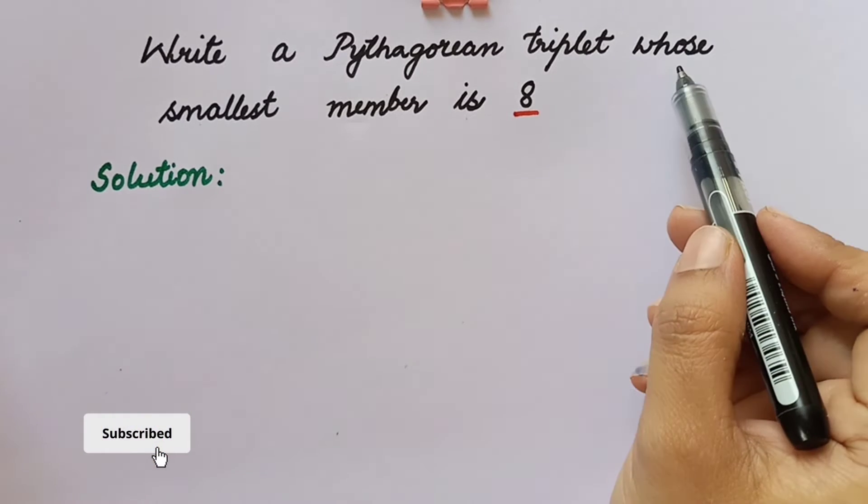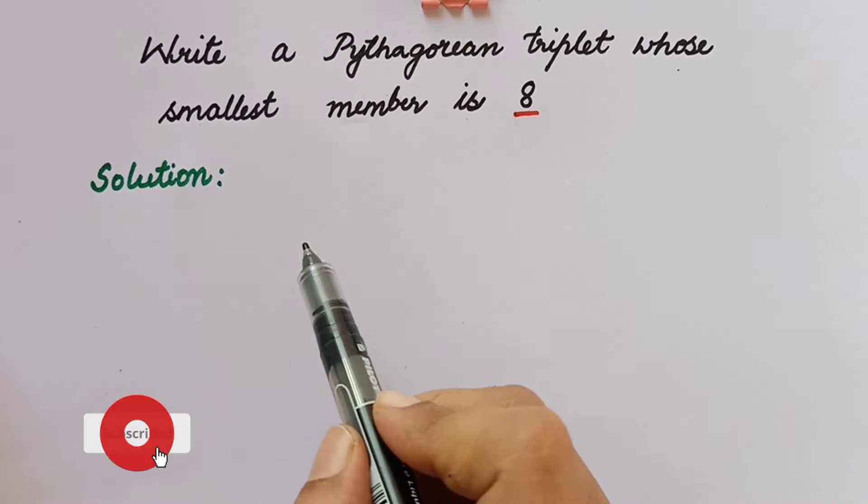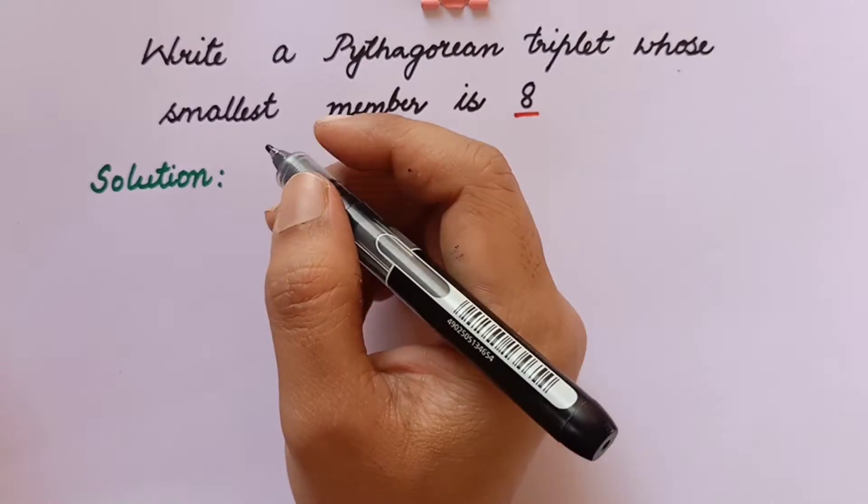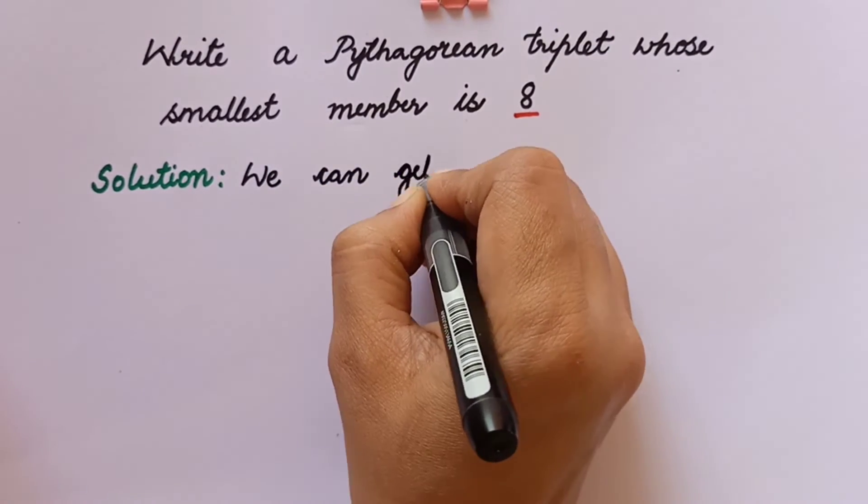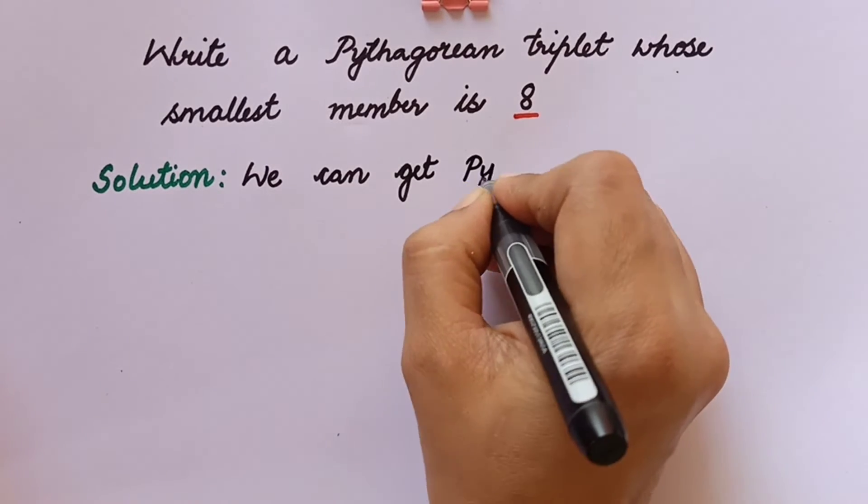Hi everyone, welcome back to my channel Train Tutor. Here in this session we'll see how to find the Pythagorean triplet whose smallest member is 8. So let us see the solution here.